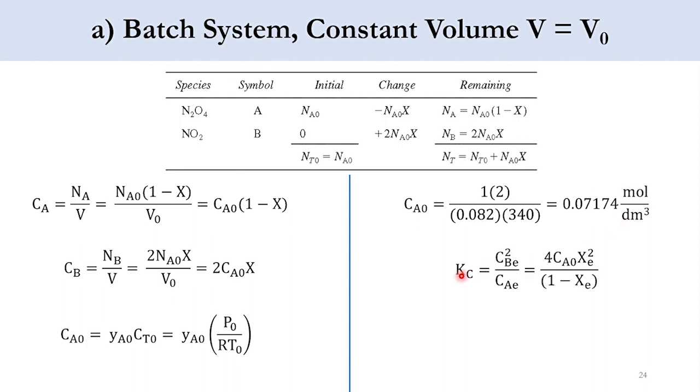For K_C, if we substitute the value C_B at equilibrium, it is equal to 2 times C_A0 x, but now this x will be x_E because we are talking about the equilibrium. And accordingly, C_AE is equal to C_A0 times 1 minus x_E. And finally, once we rearrange it to get expression in terms of equilibrium conversion, x_E is equal to square root of K_C into 1 minus x_E over 4C_A0. So this is our first part of the system.